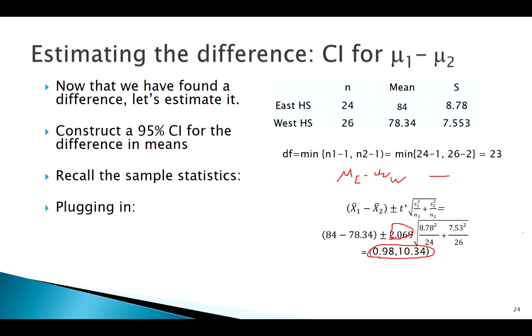So a positive difference would indicate that these values for east are bigger than the value of west. Now, it's either a pretty big interval here, but it's either slightly positive or about 10 points more positive. That's what we're estimating this difference as.